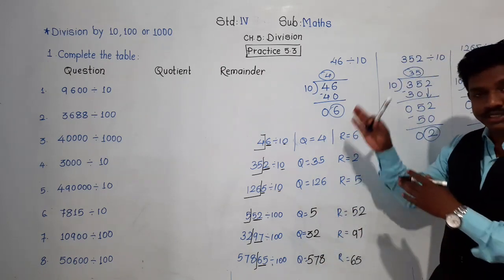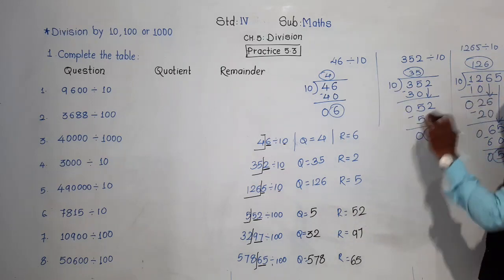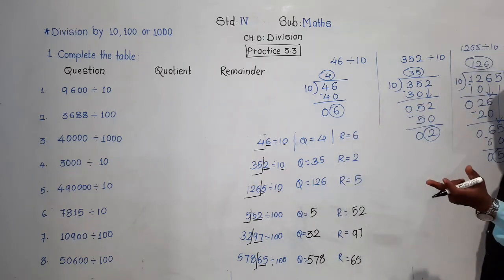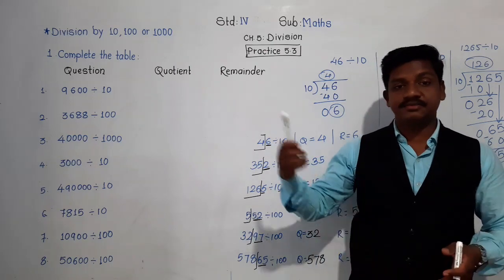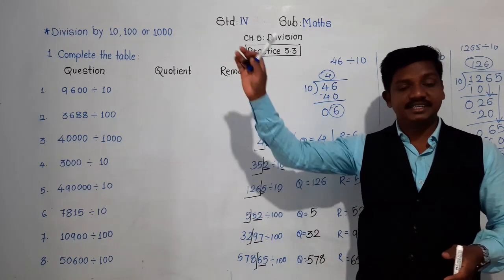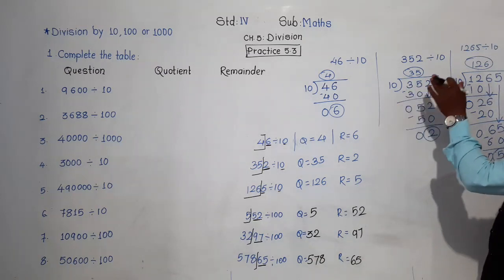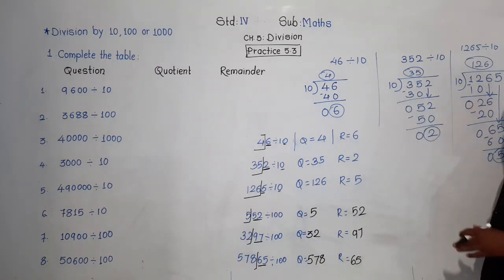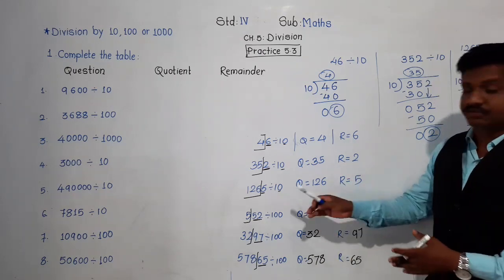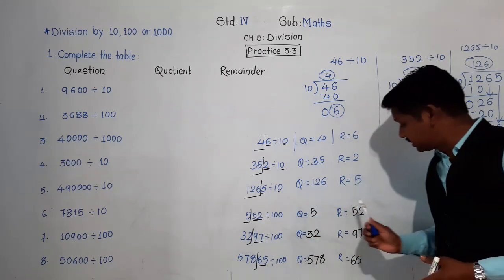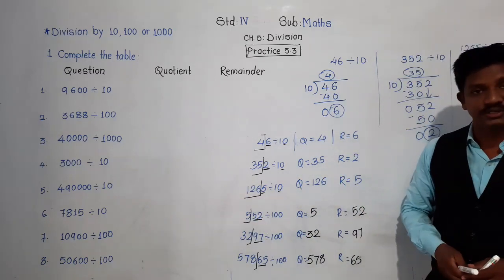You can check this by doing the division and you will get the same result — the number formed by the last two digits is the remainder, and the rest part of the number is the quotient. Same logic applies for 1000.